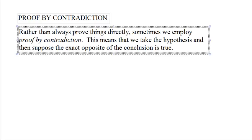Proof by contradiction. Rather than always prove things directly, sometimes we employ proof by contradiction. That means we take the hypothesis and suppose the exact opposite of the conclusion is true.